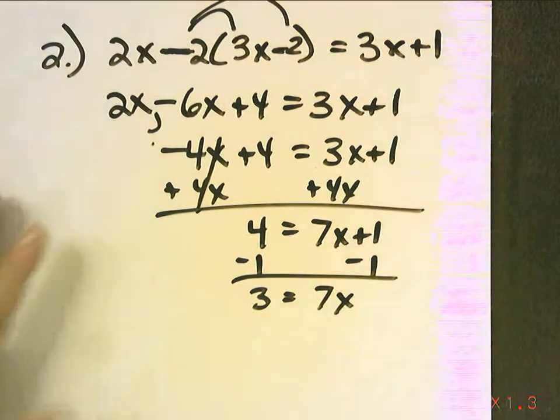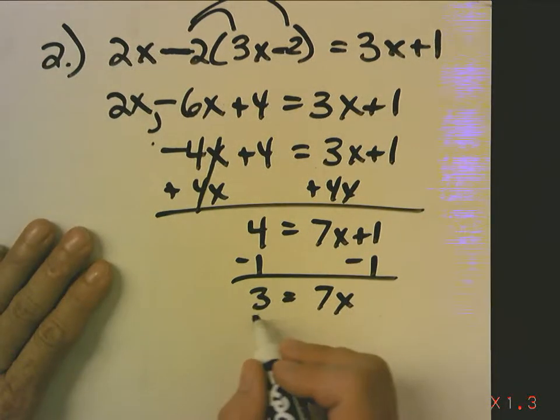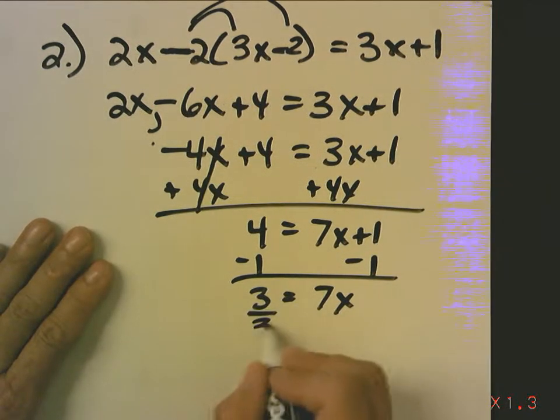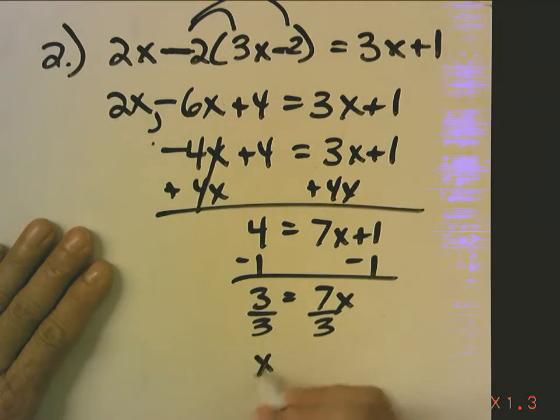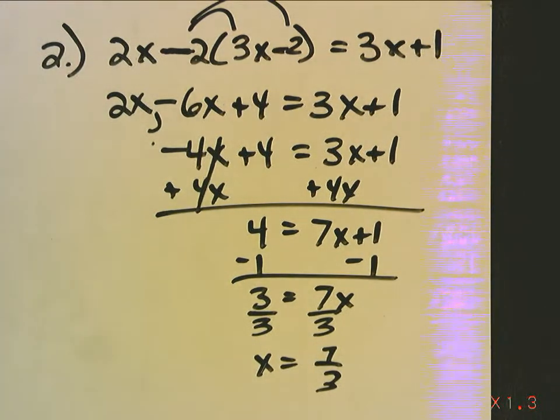Now, look at this step. I'm going to purposely do something wrong. See if you can figure out what I'm doing wrong. And now I'm going to say divide by 3, divide by 3, x equals 7 thirds. Because this is the type of answer I see sometimes.